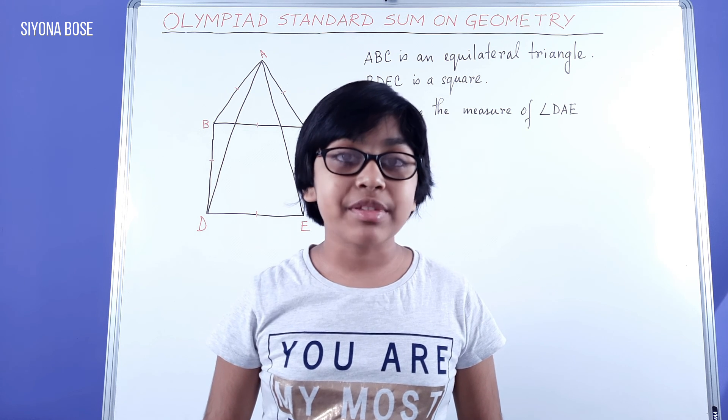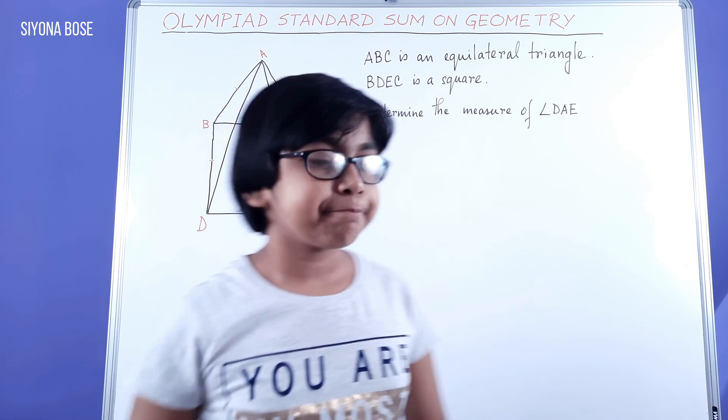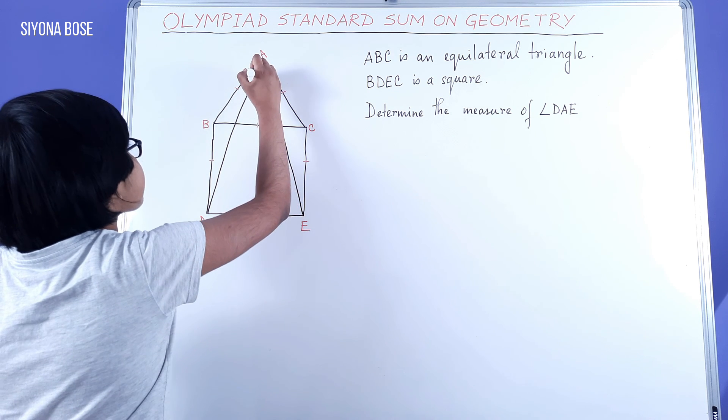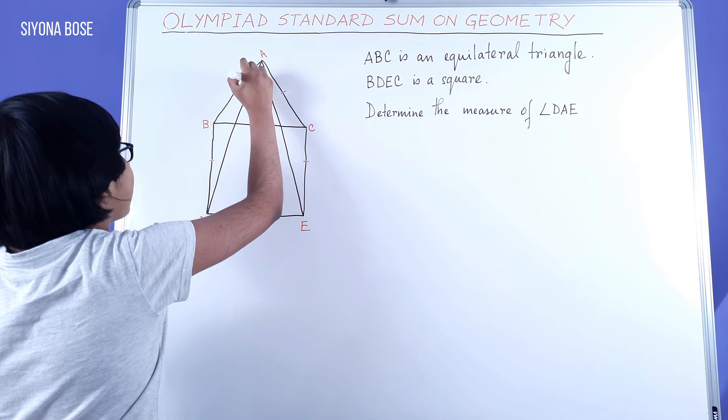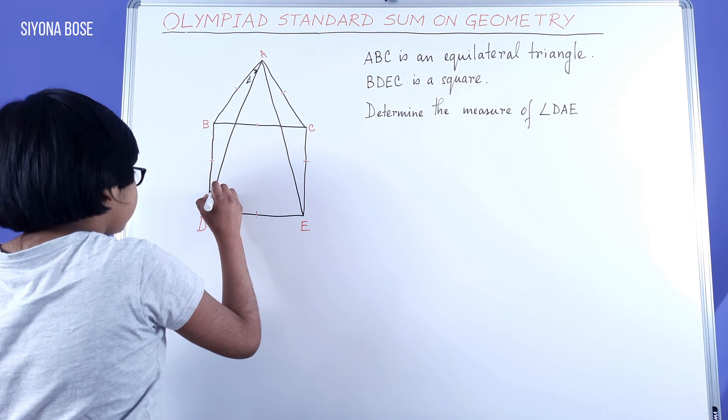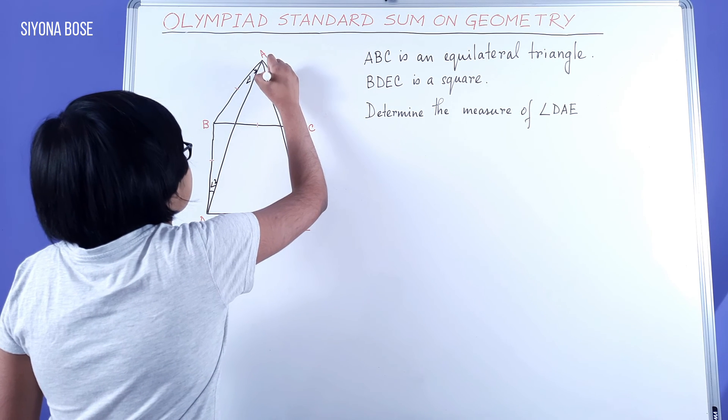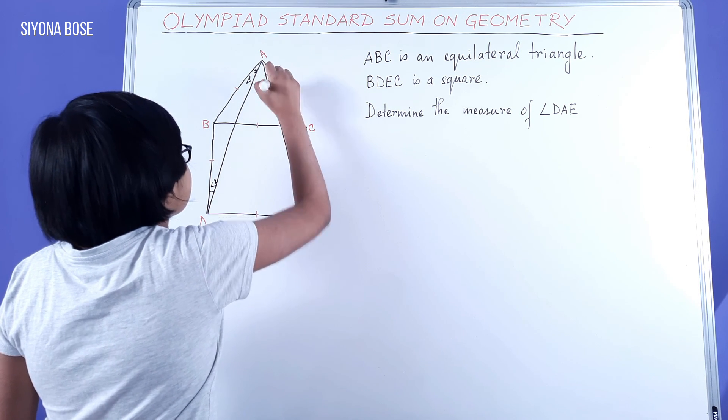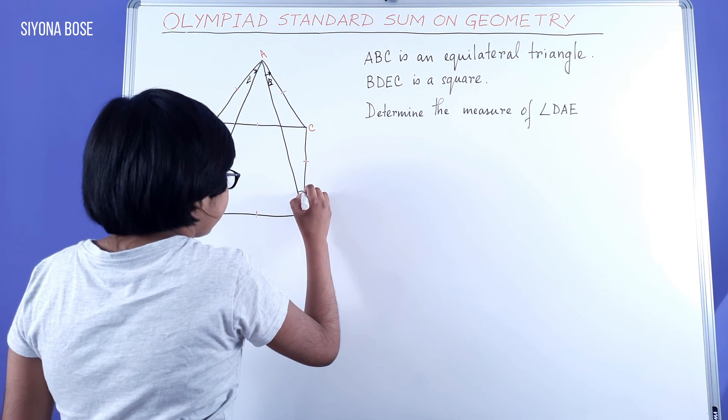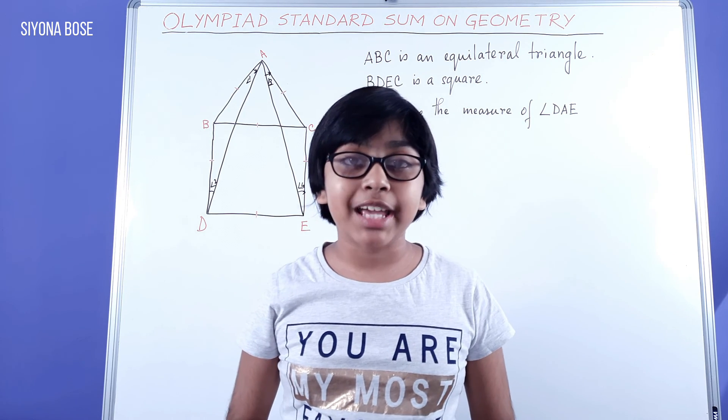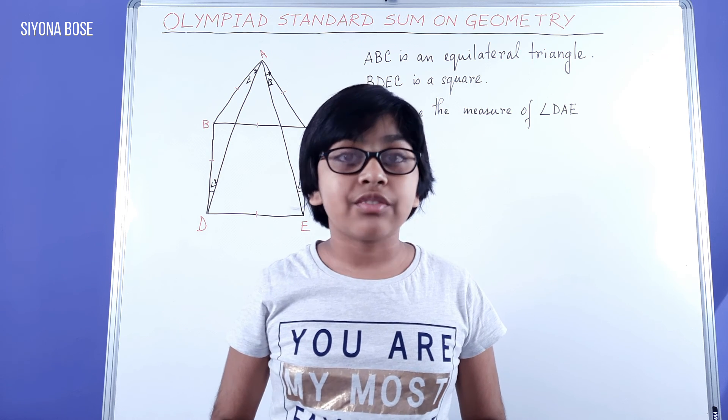First, we have to do some annotating. Angle 1, angle 2, angle 3, and angle 4. Now that we have done our labeling, let's begin.